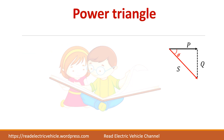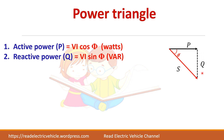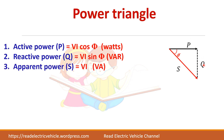Next we will draw the power triangle. The active power P and reactive power are in opposite directions, giving minus Q. S is the resultant of active power and reactive power, so S equals root of P squared plus Q squared.